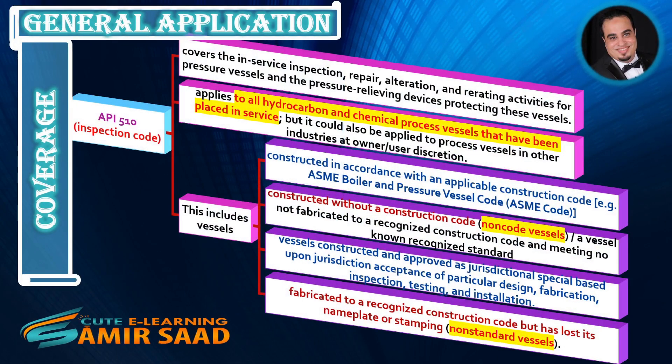General Application Coverage: API 510 Inspection Code covers the in-service inspection, repair, alteration, and re-rating activities for pressure vessels and the pressure-relieving devices protecting these vessels. It applies to all hydrocarbon and chemical process vessels that have been placed in service, but could also be applied to process vessels in other industries at owner-user discretion.